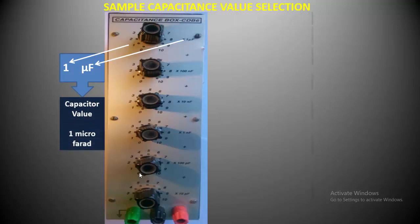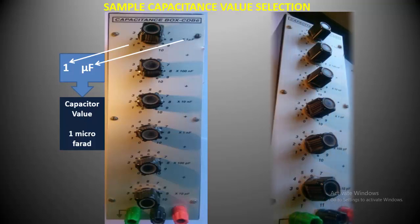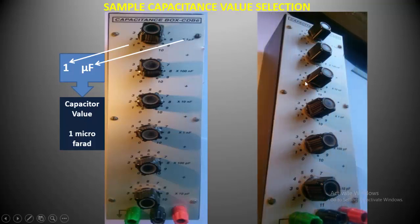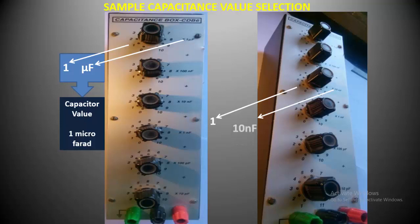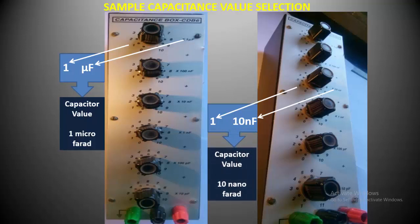In this second example, you will see that the knob is also on 1, but the range of that knob is 10 nanofarad. All other knobs are on 0. So what is the total selected value? It is 1 multiplied by 10, that is, 10 nanofarad.